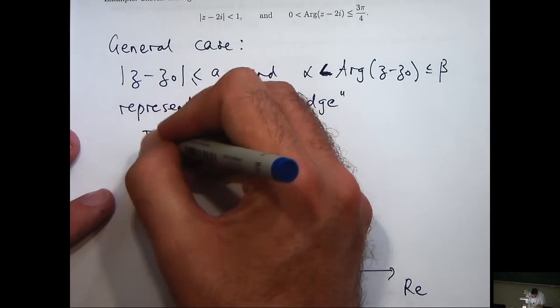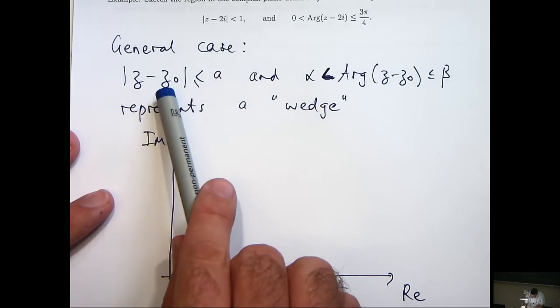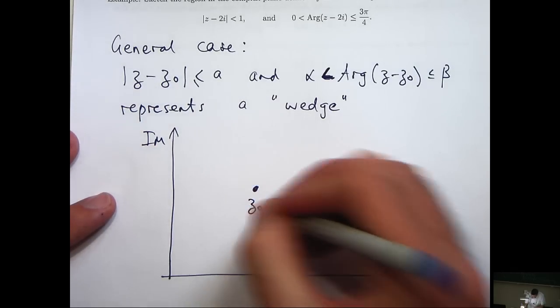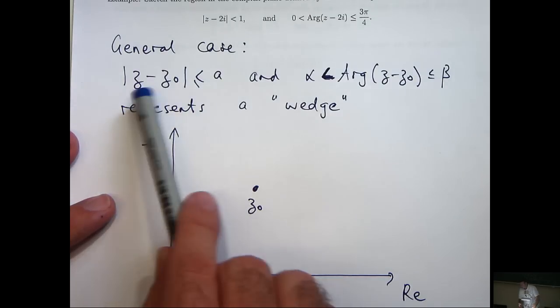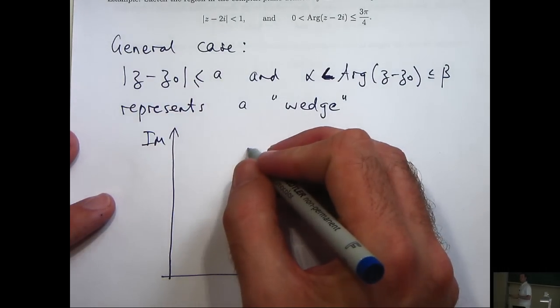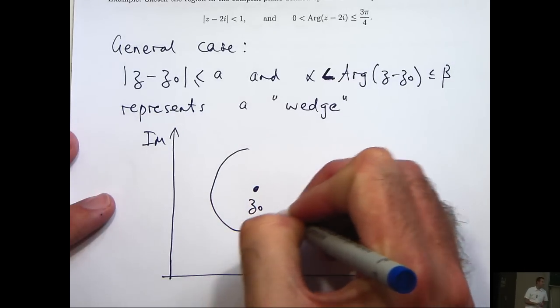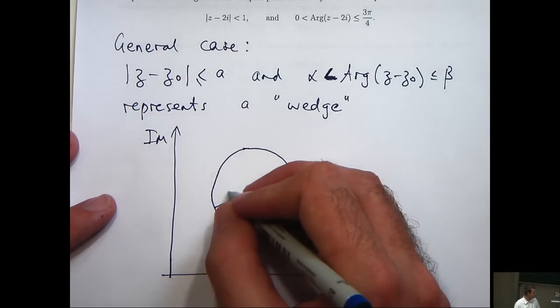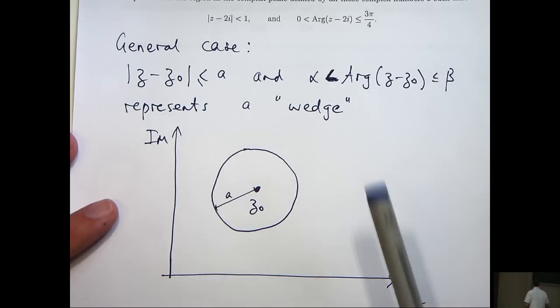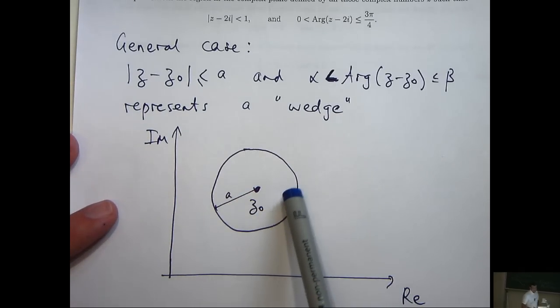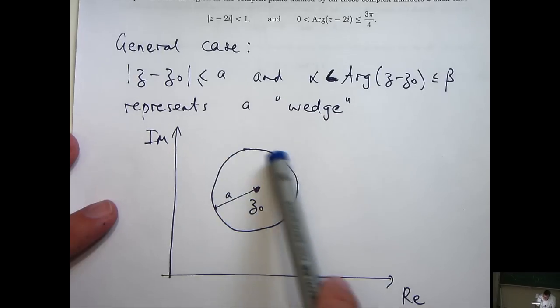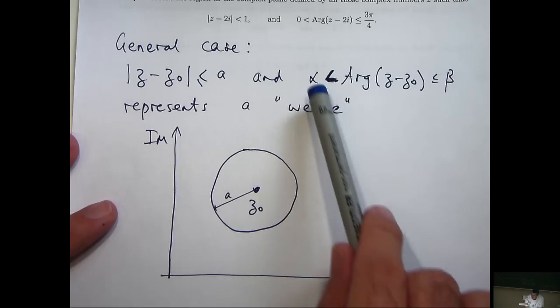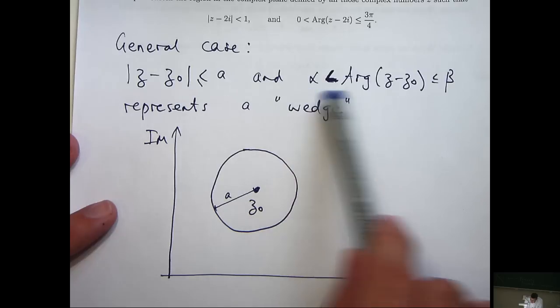So here are our axes. Alright, so first of all we move to z0, say it's here, and we draw a circle around z0 with radius a. Okay. Alright, so what we would like to do is include all those complex numbers that surround the point z0 within this radius.